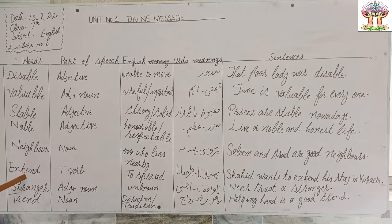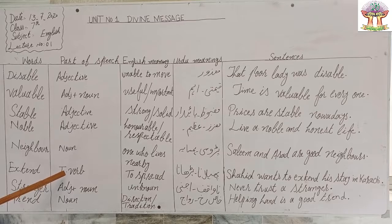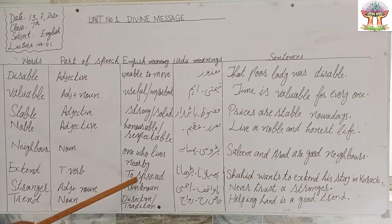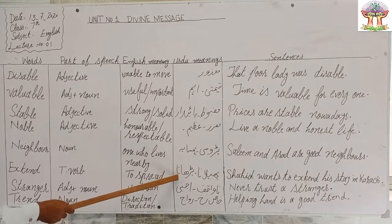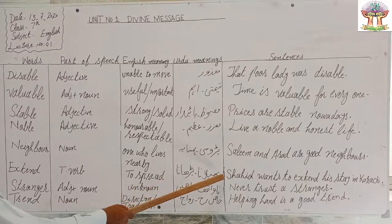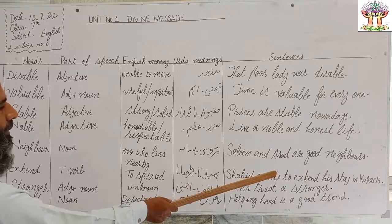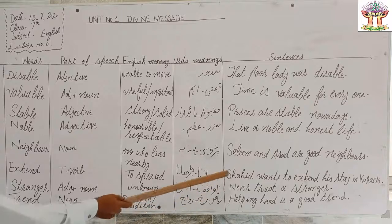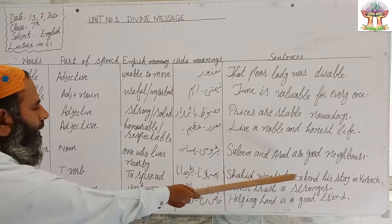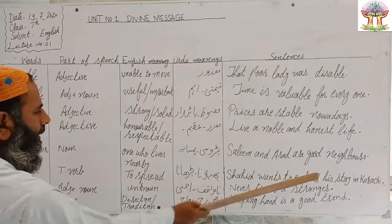Next word is 'extend.' It is a verb in parts of speech. English meaning: to spread. Urdu meanings: pheilana, bhathana. Sentence: 'Shahid wants to extend his estate in Karachi.'